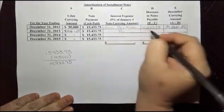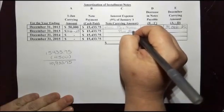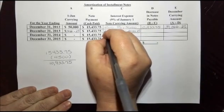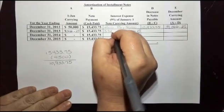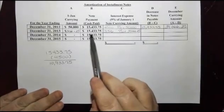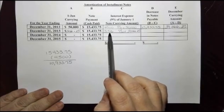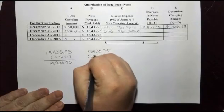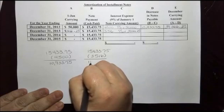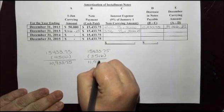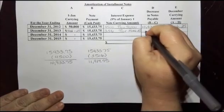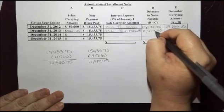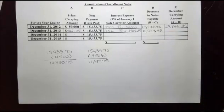We multiply $39,066.25 by 9%, and we determine that the interest amount for the second year is $3,516. So we take the annual payment of $15,433.75 and subtract the interest. That leaves us with $11,917.75 — that is how much the note is going to decrease for the year, the actual principal amount decreasing by $11,917.75.